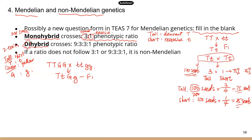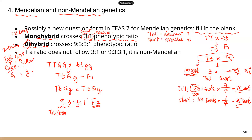The F1 generation is going to cross, and you are going to get that 9 to 3 to 3 to 1 ratio in the F2 generation. The 9 represents the proportion of offspring that have both dominant traits — so that's tall and green. The two 3s represent seeds that have just one dominant trait and one recessive trait: one could be tall but yellow seeds, and the other is short but with green seeds.